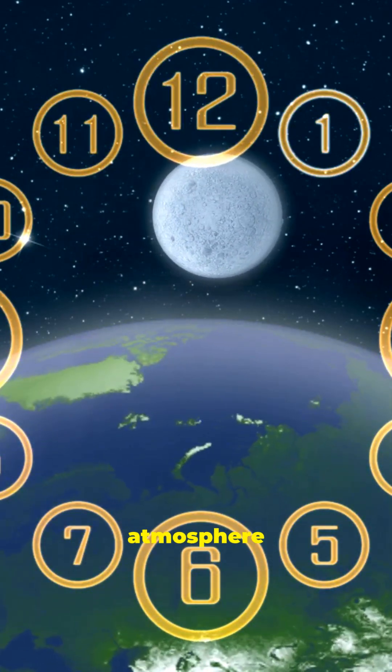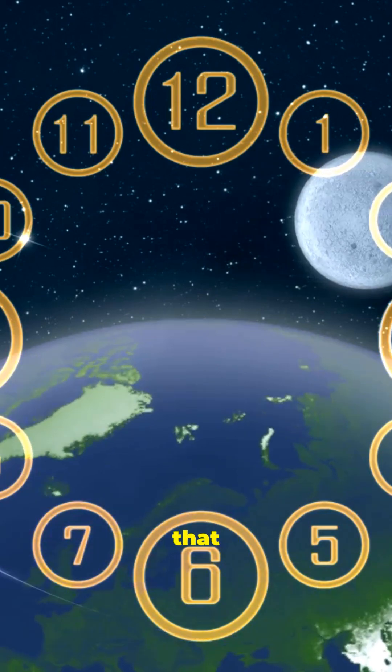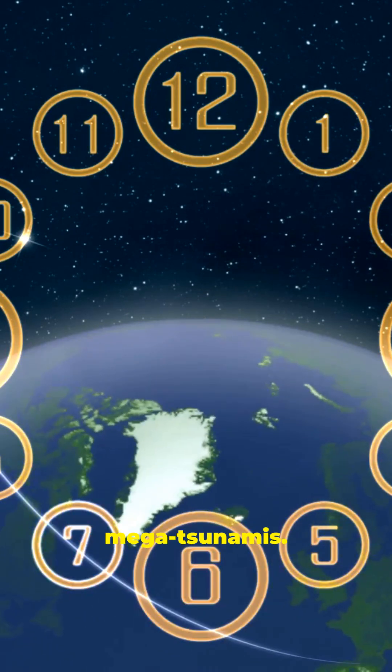Earth spins at about 1,670 kilometers per hour at the equator. If it suddenly stopped, the atmosphere and oceans would keep moving at that speed, unleashing devastating winds and megatsunamis.